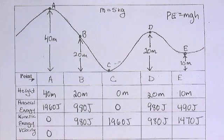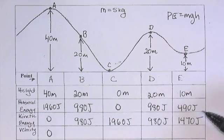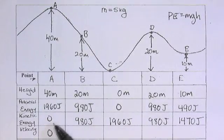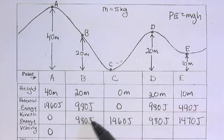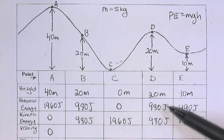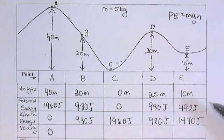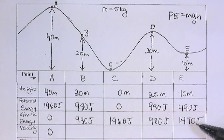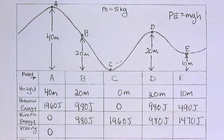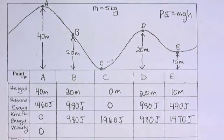Now, all we're missing is velocity. So, just to review one more time. 1960 plus 0 is 1960. 980 plus 980 is 1960. 0 plus 1960, 1960. 980 plus 980, 1960. 490 plus 1470 is 1960.